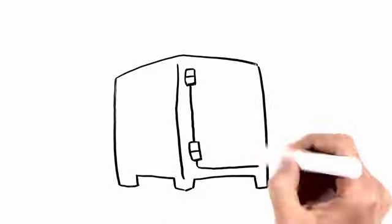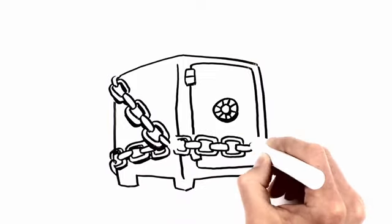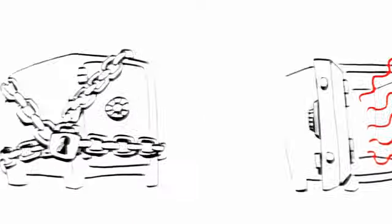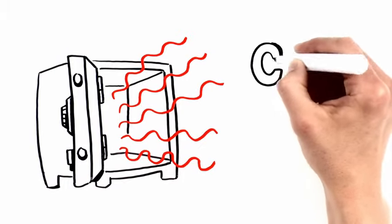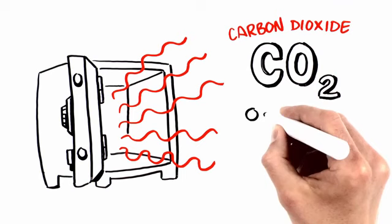Those fossil fuels—coal, oil, natural gas—contain carbon that's been locked away from the natural cycle for eons. But when we burn them, that carbon joins with oxygen to make carbon dioxide that goes into the atmosphere.